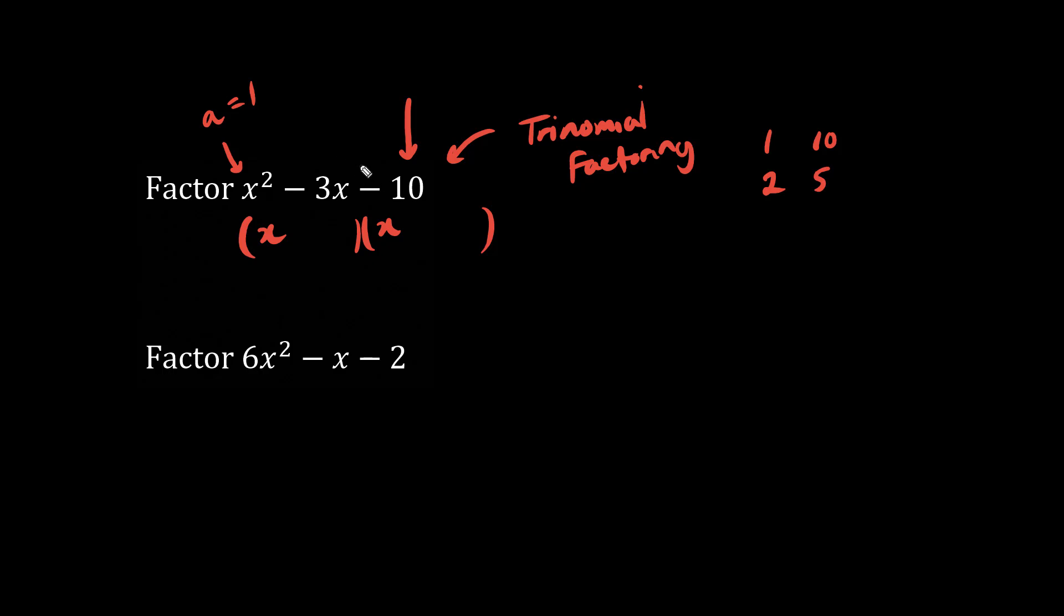Now the challenge is to find two numbers that multiply to be negative 10, but add to be the coefficient of x, which is negative 3. When we add these two numbers with some variation of plus or minus in front of them, which one feels like a 3? 1 and 10 are too far apart, so let's choose 2 and 5.